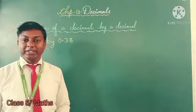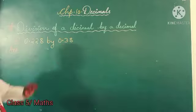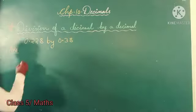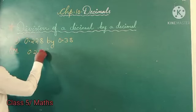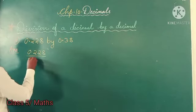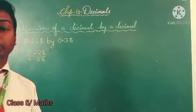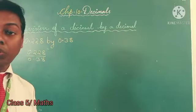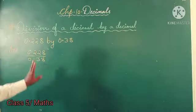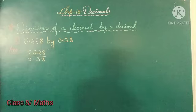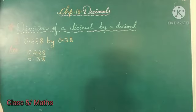We will divide these 2 decimal numbers. Now we have to convert this denominator into a whole number. So for converting it into a whole number, we will multiply both numerator and denominator by 100. Why? Because the denominator is having two decimal places.